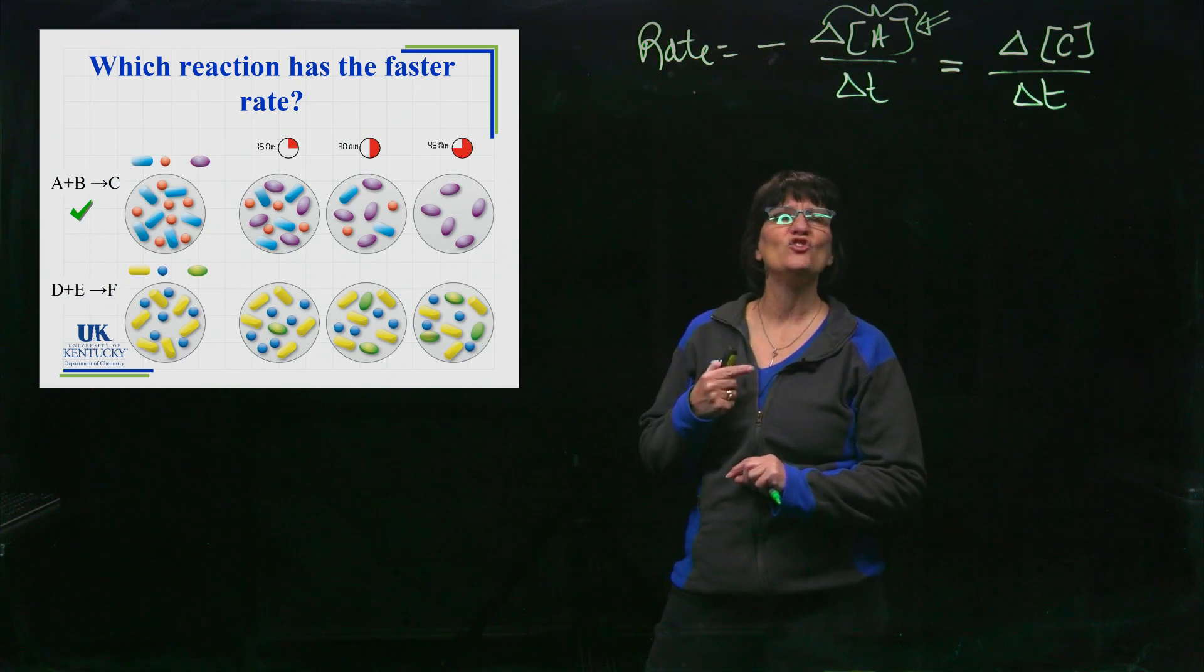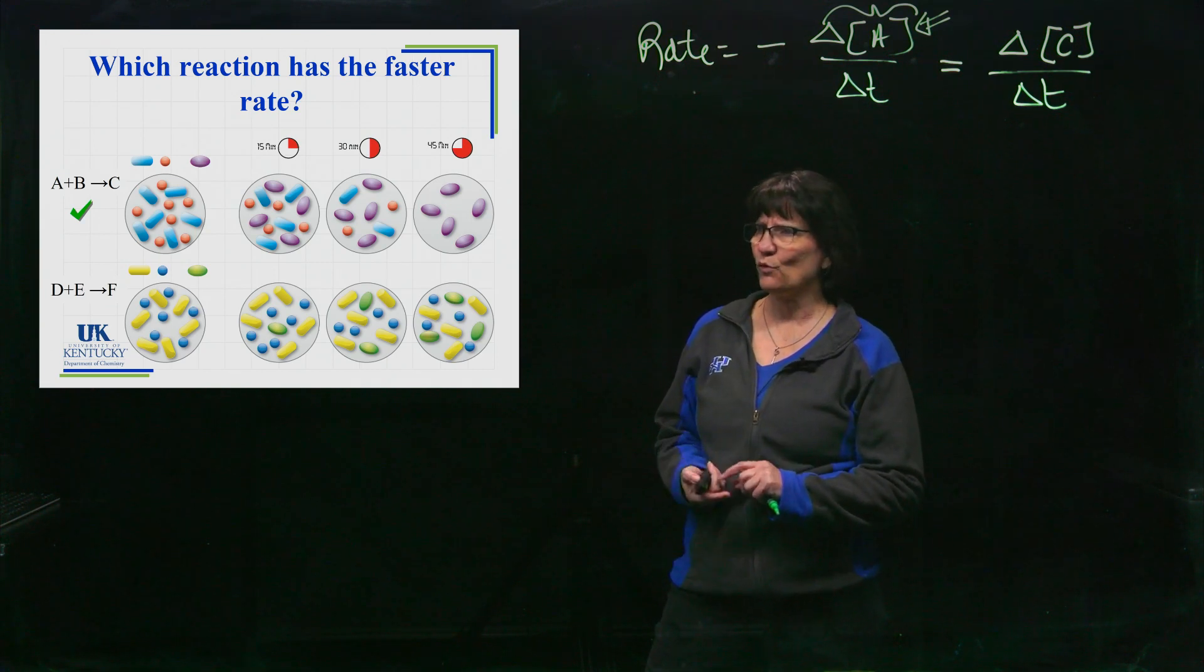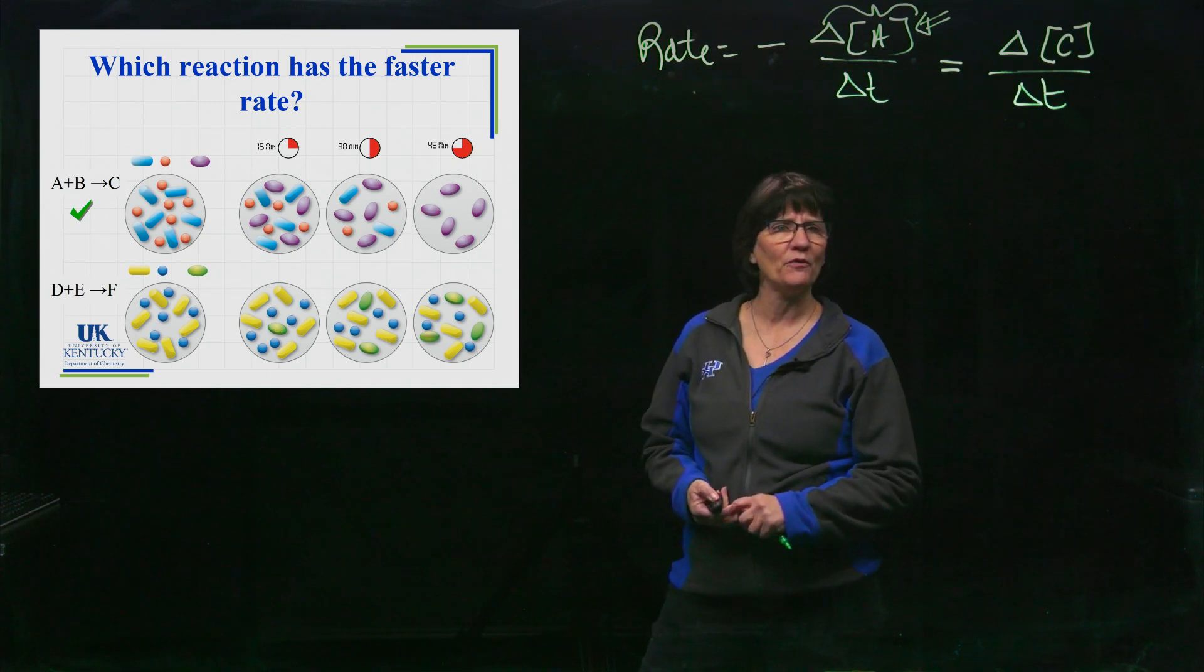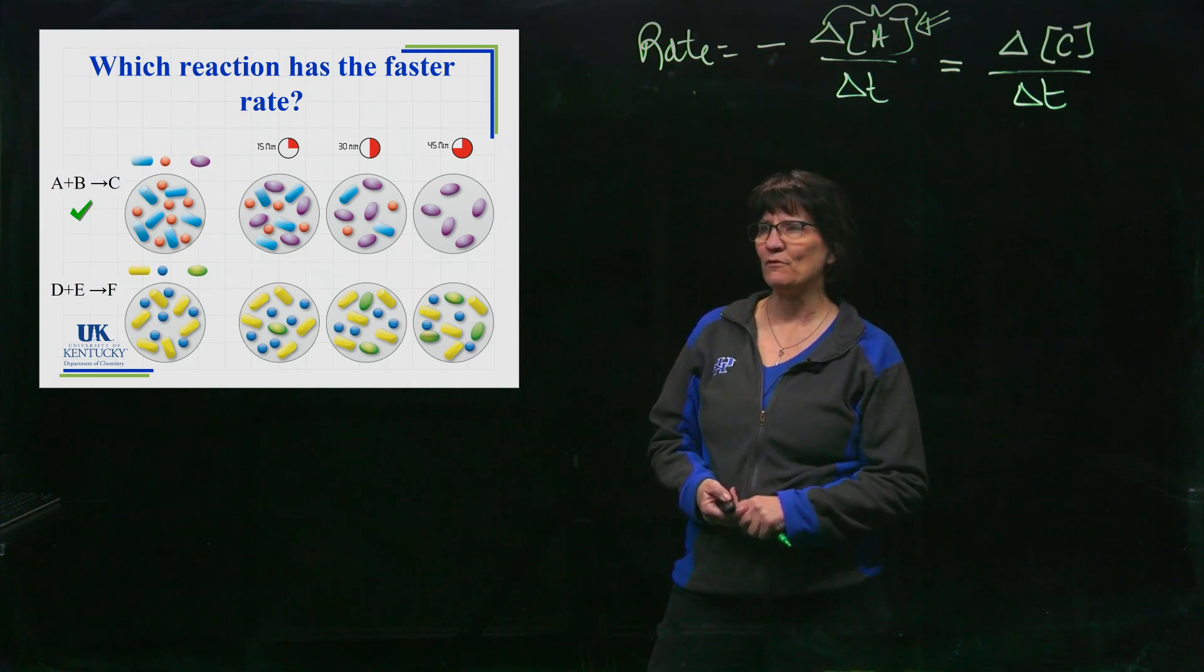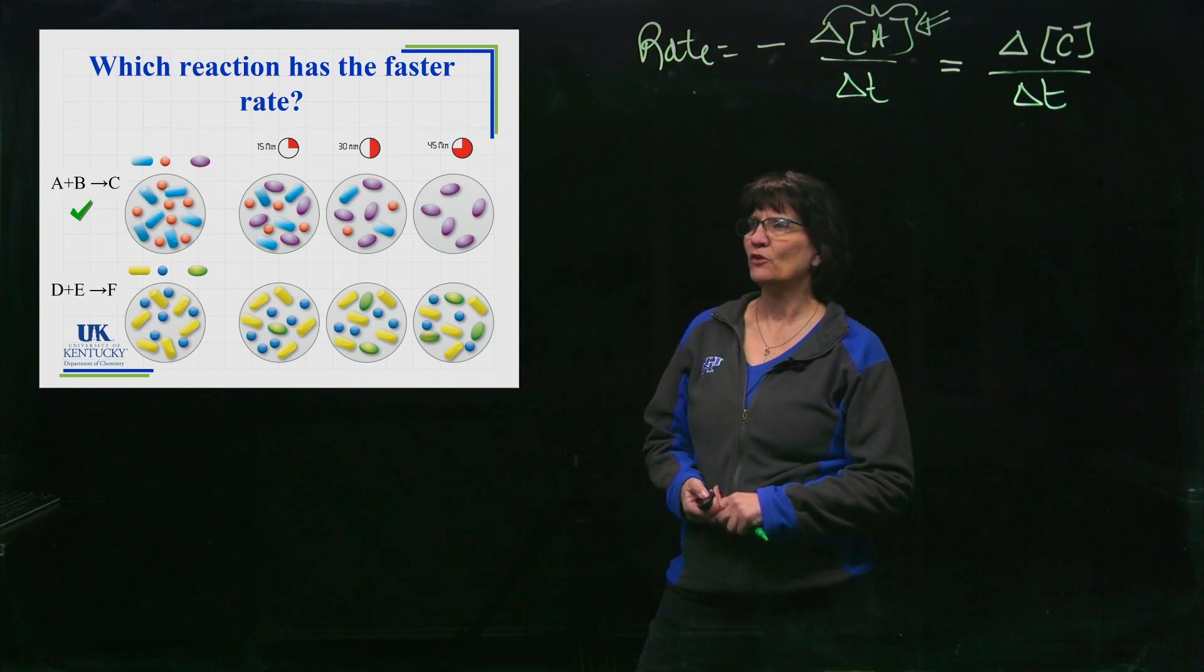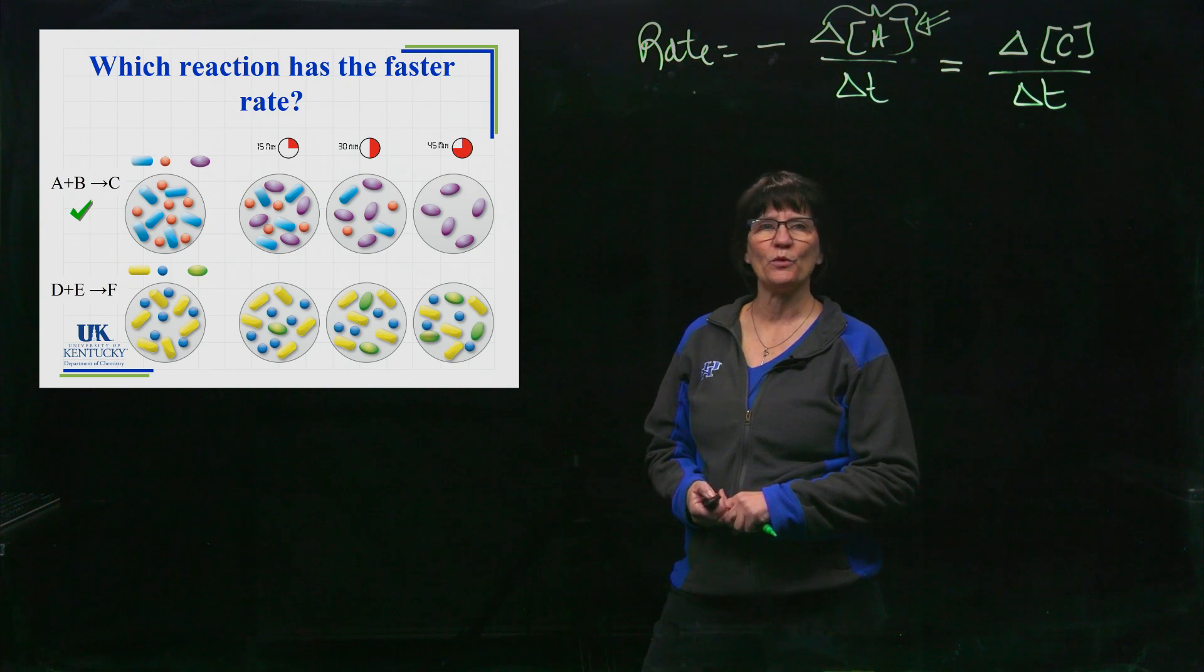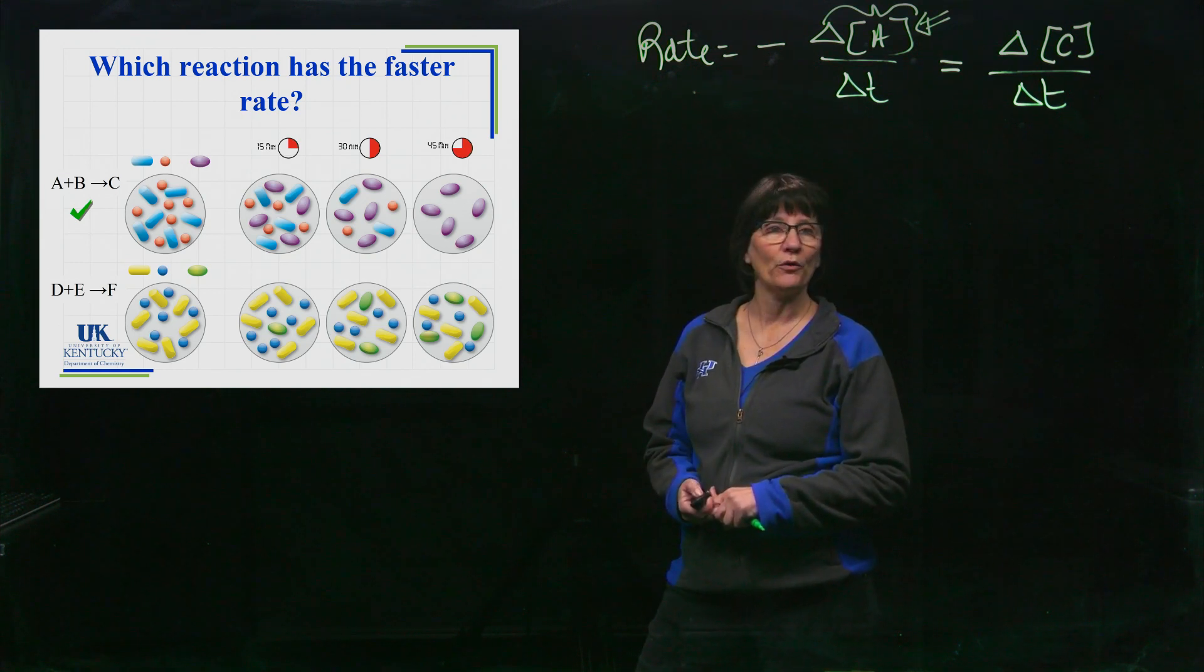We start with the same amount of both, but in the top image we consumed all of our reactants in that 45 minutes. In the second reaction we still have some of the reactants left and we haven't formed as many products, so it's happening at a slower rate. So if we did change in concentration with respect to time, we would get a different value for both of those reactions.